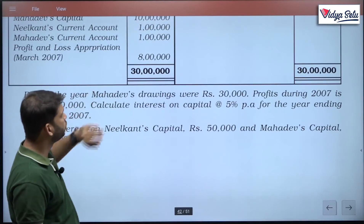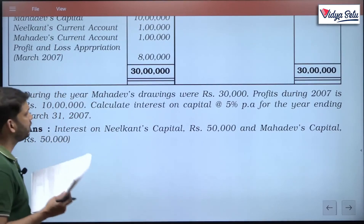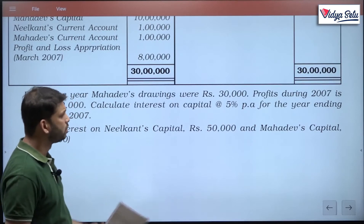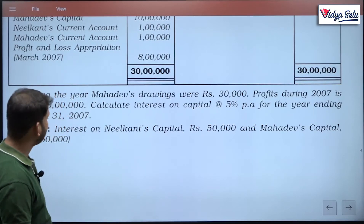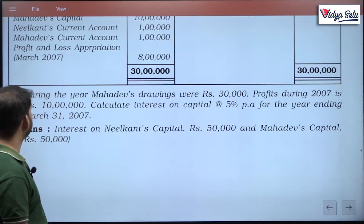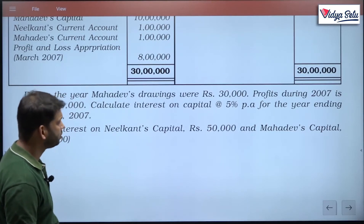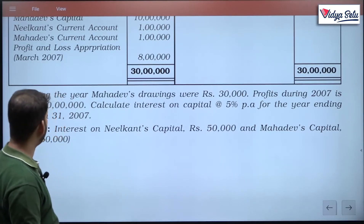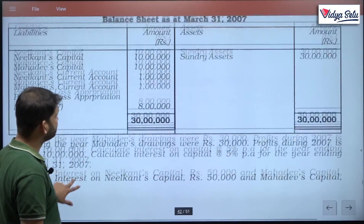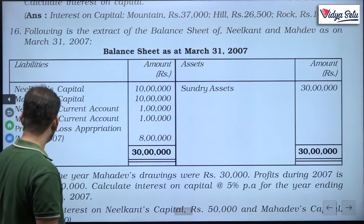The profit and loss appropriation balance is still showing, so it is undistributed. During the year Mahadev's drawings were rupees 30,000, profit during the year 2007 is rupees 10 lakhs. Calculate interest on capital at 5 percent per annum for the year ending March 31, 2007. This is already the closing capital, so let us solve it.